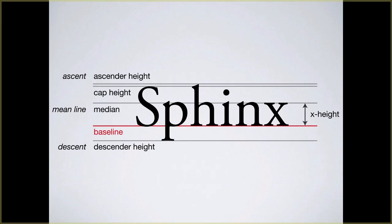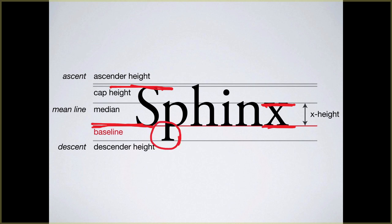Here we have our capital letter and our baseline. Our cap-height goes all the way up to the top of a capital letter. Our x-height is from the baseline to the top of the letter X — same as N or any other standard lowercase letter without ascenders or descenders. The descender is things like P, G, Q that hang down from the x-height. Ascenders are things like D's and H's that stick up.